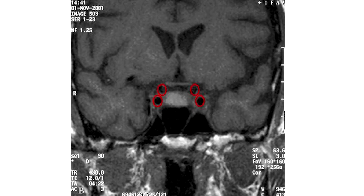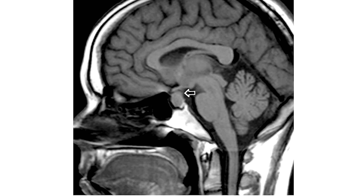This is what the internal carotid artery looks like, which is located directly near the pituitary gland. Next, I'll give you an example of an MRI scan of a patient with pituitary adenoma. This is the pituitary adenoma. This is the neurohypophysis. And this is the optic nerve chiasm. As you can see, the adenoma is quite close to it.